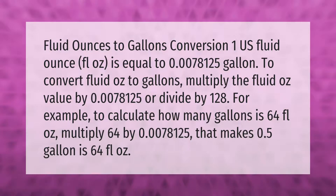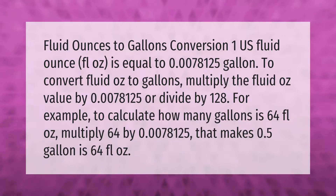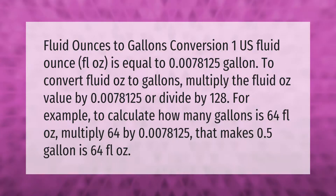For example, to calculate how many gallons is 64 fluid ounces, multiply 64 by 0.0078125. That makes 64 fluid ounces equal to 0.5 gallon.